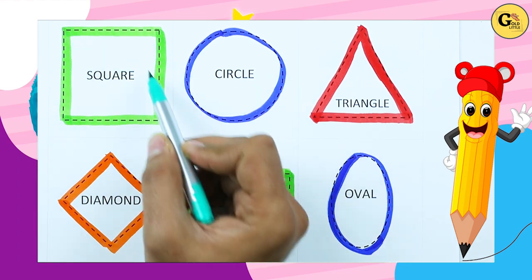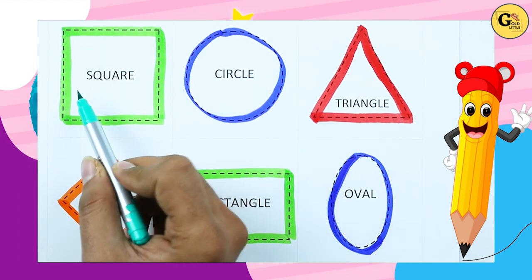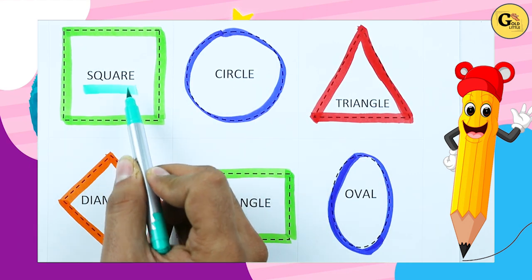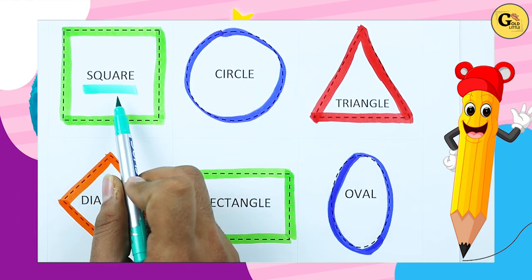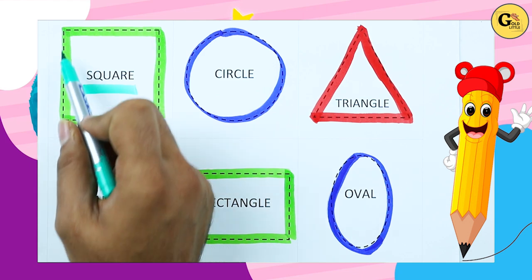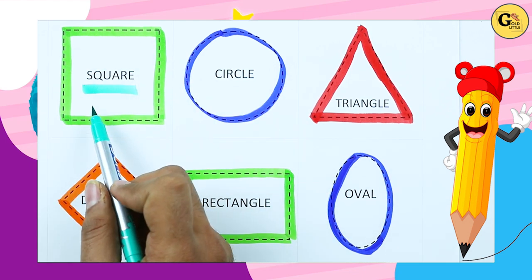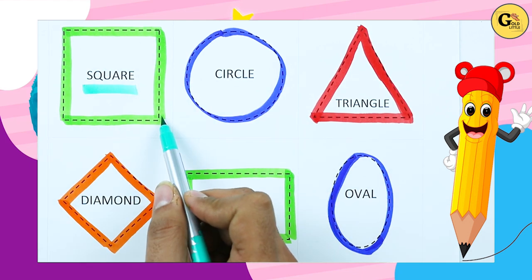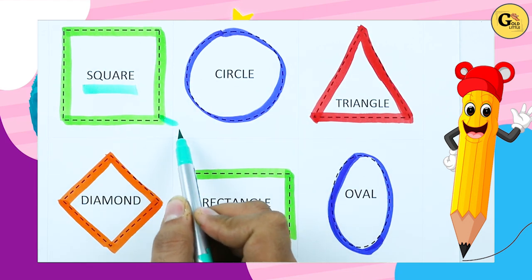Which shape is this? Tell me — square. S-Q-U-A-R-E. It's a square, with green color.